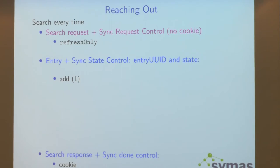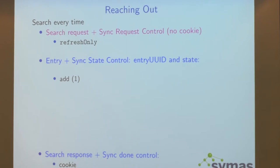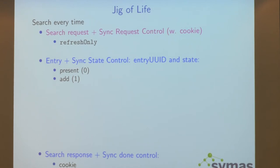As a simple client, you want a copy and you know nothing yet. You start a search and say: I want to do Syncrepl, I don't know anything yet, I'm not giving you a cookie. The server gives you entries — each entry will have the unique identifier attached to it. Then you get a notification that the search is finished, providing the cookie to use next time you want a refresh. If you had anything else stored locally, you can get rid of it.